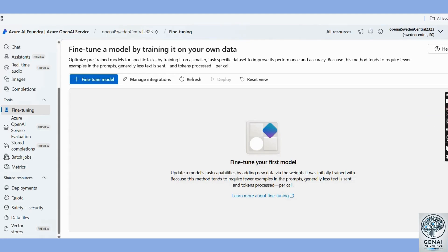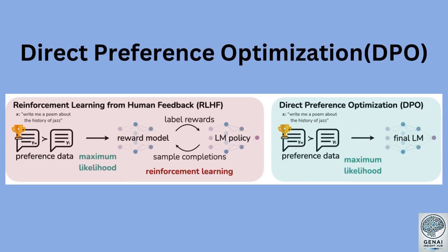Welcome. Today we're learning to fine-tune the GPT-4o model using the DPO technique. We're going to explore fine-tuning using the DPO method, which stands for direct preference optimization. This approach allows the model to learn from example datasets efficiently.